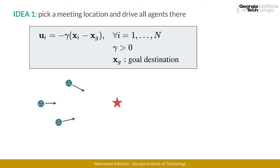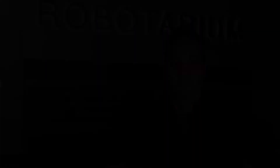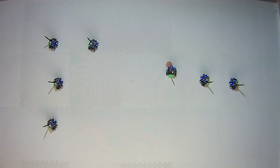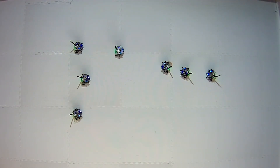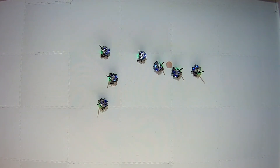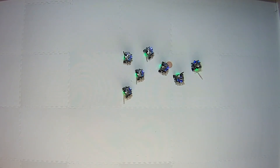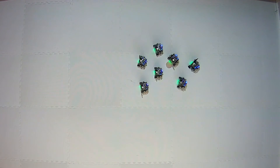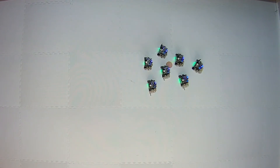Let's see what would happen to a team of robots following this control law. In this first experiment, we're going to try out our first strategy, where a team of seven robots will drive from their initial location to a desired final location. As we can see, the robots did drive to a common location, and they all ended up meeting. Problem solved.